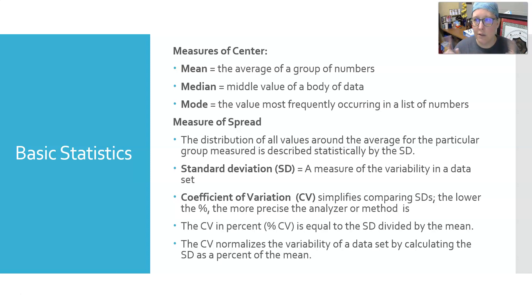If it's an even number of values, then the median is the number that would be in the middle of the two middle numbers. So if the two middle numbers are nine and ten, then it would be 9.5. The mode is the value that is most frequently occurring in the list of numbers.